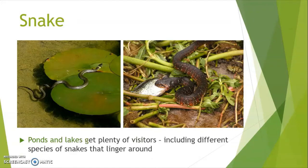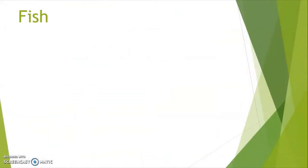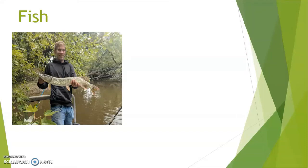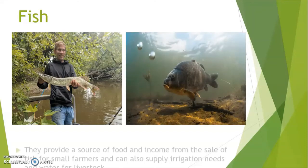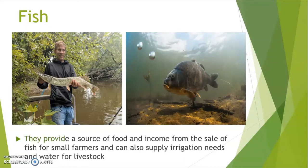Snakes: ponds and lakes get plenty of visitors, including different species of snakes that linger around. Fish: they provide a source of food and income from the sale of fish for small farmers, and can also supply irrigation needs and water for livestock.